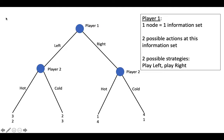Let's start with our left-right hot-cold example. In this game, player 1 has one node, meaning that they have one information set. At this node, player 1 has two possible actions they can choose: left or right. Therefore, player 1 has two possible strategies: play left or play right.